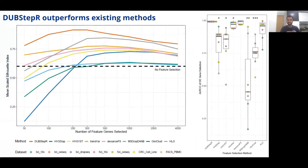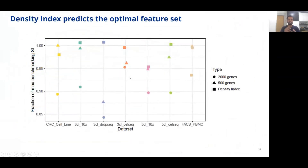In terms of both silhouette index and AUROC, we found that Dubstepper does outperform the existing methods. However, the second best performing method in the case of silhouette index is the high-loading genes method based on PCA, while in the context of DE gene detection, it is the new state-of-the-art deviance-based feature selection. The density index I introduced earlier allows us to optimize the feature set, and in five out of the seven datasets analyzed, it provides an improvement in silhouette index over the peak seen in the previous results.